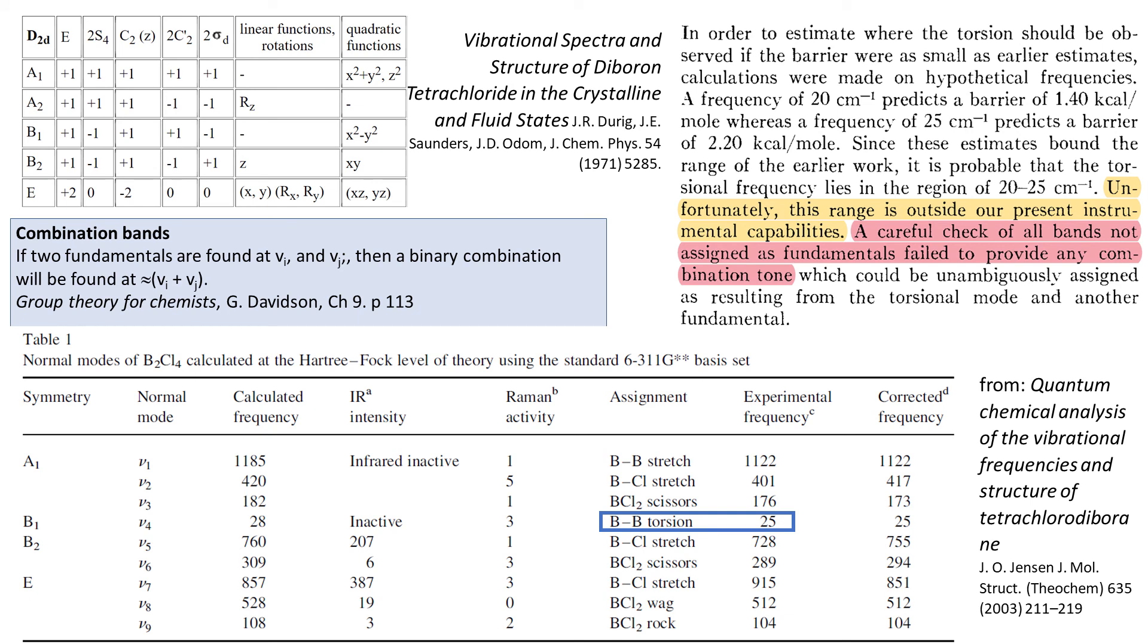What is a combination band? If two fundamentals are found at νi and νj, then the binary combination will be found at about νi plus νj. So this entry in the table seems to be a bit of wishful thinking.